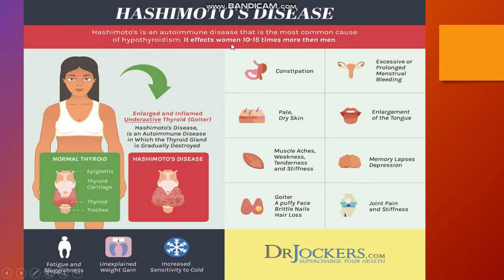Hashimoto's affects women 10 to 15 times more than men. Symptoms include constipation, excessive or prolonged menstrual bleeding, enlargement of the tongue, memory lapses, depression, joint pains and stiffness, goiter, puffy face, brittle nails, muscle aches, weakness, tenderness and stiffness, pale dry skin, and large and inflamed underactive thyroid gland.